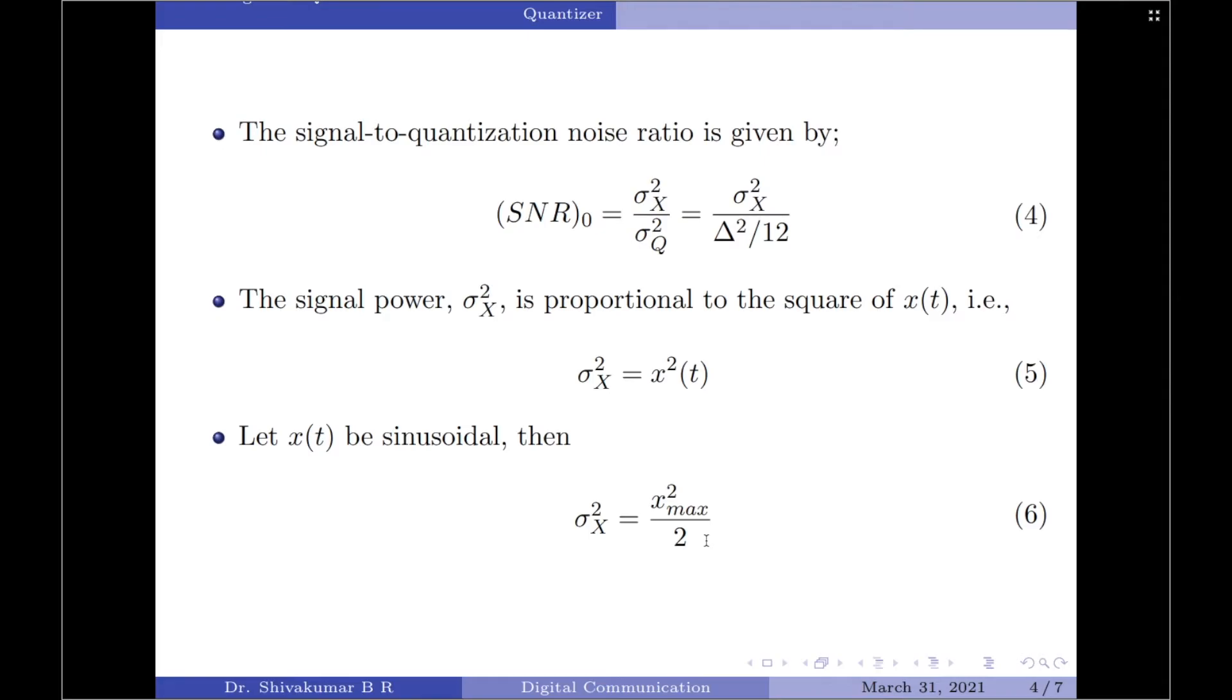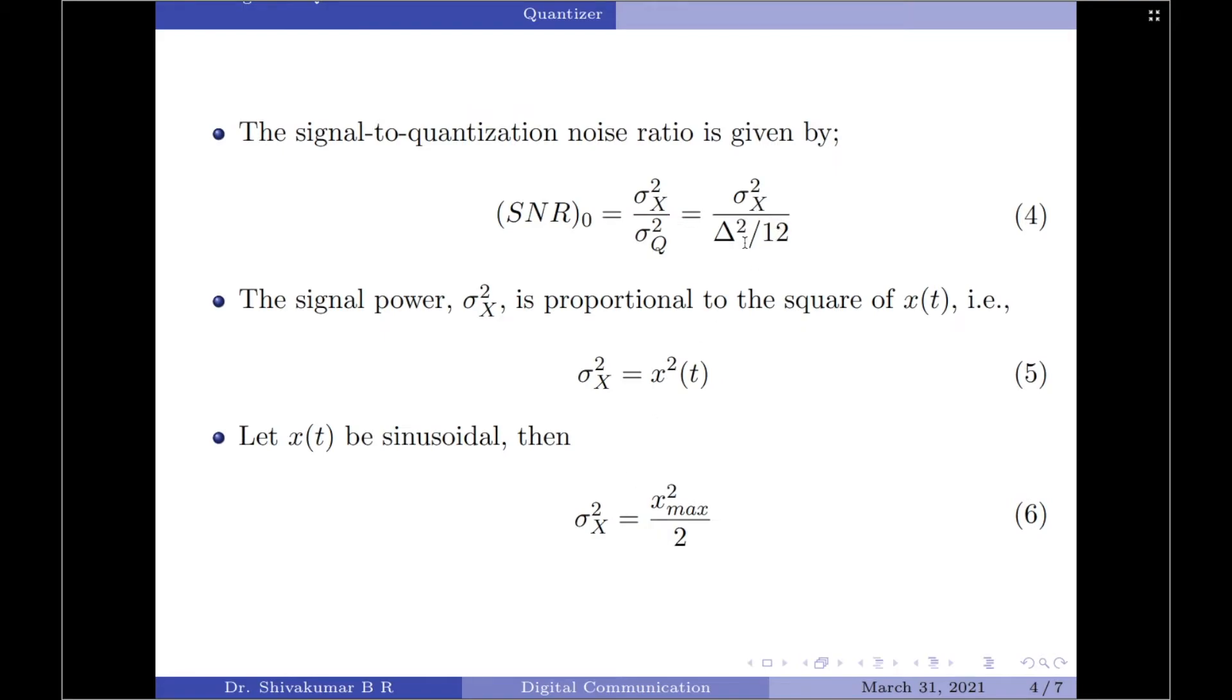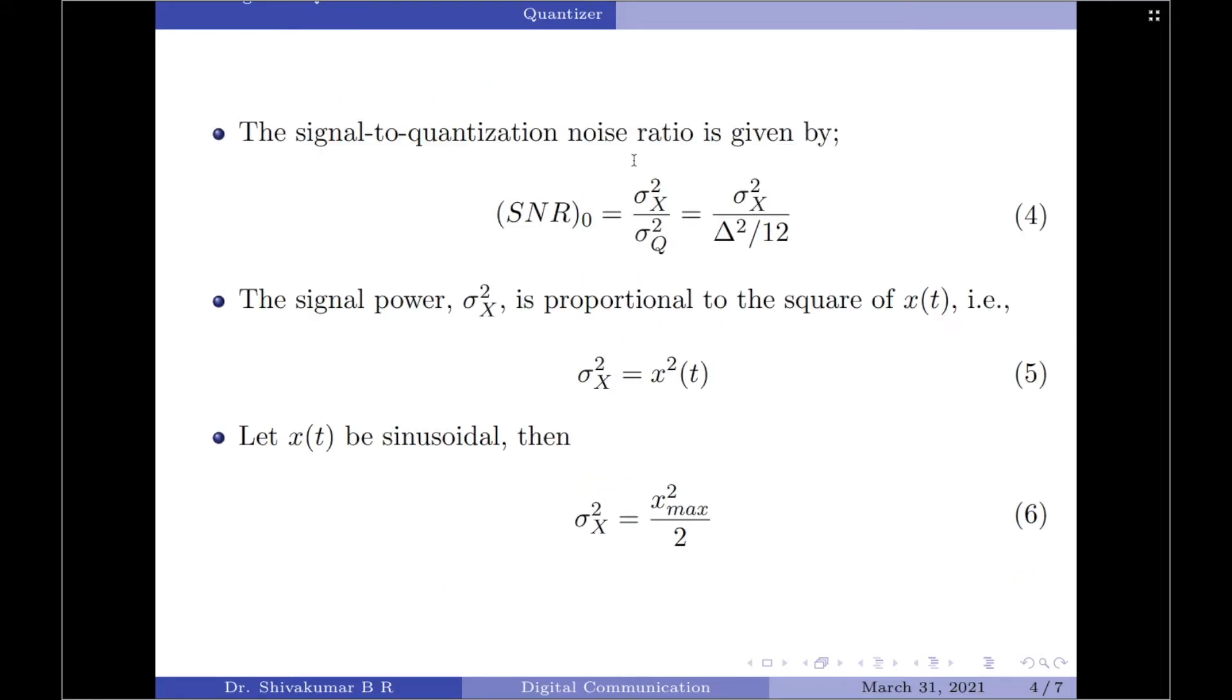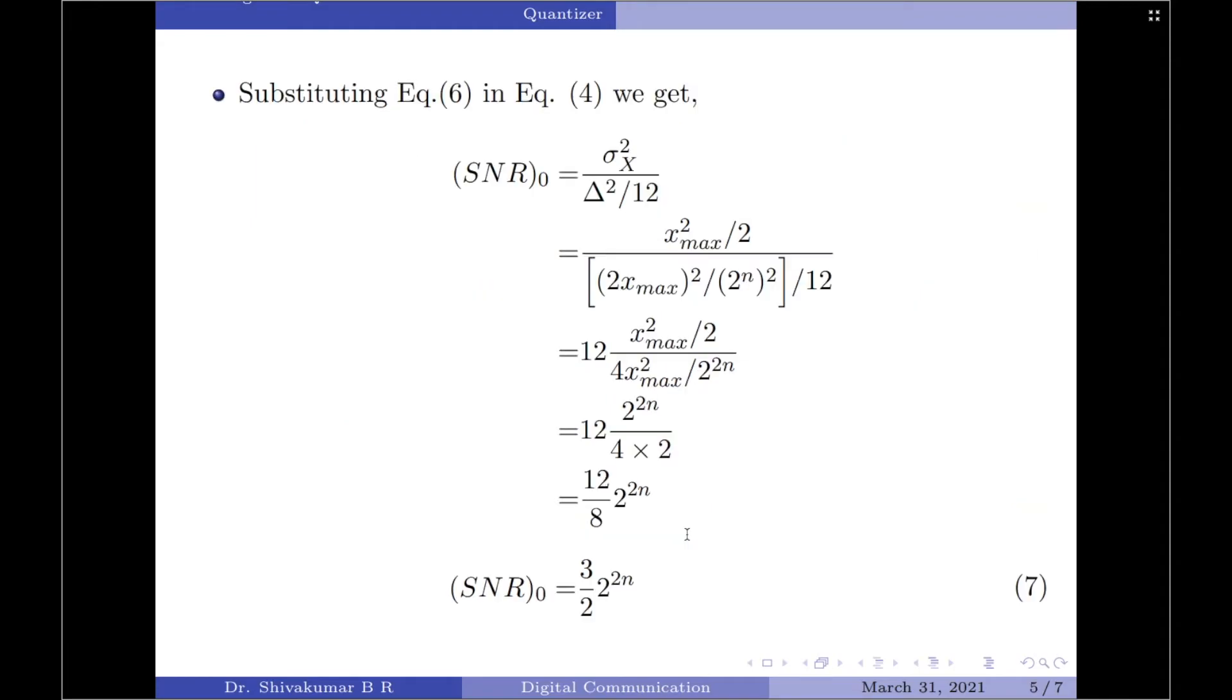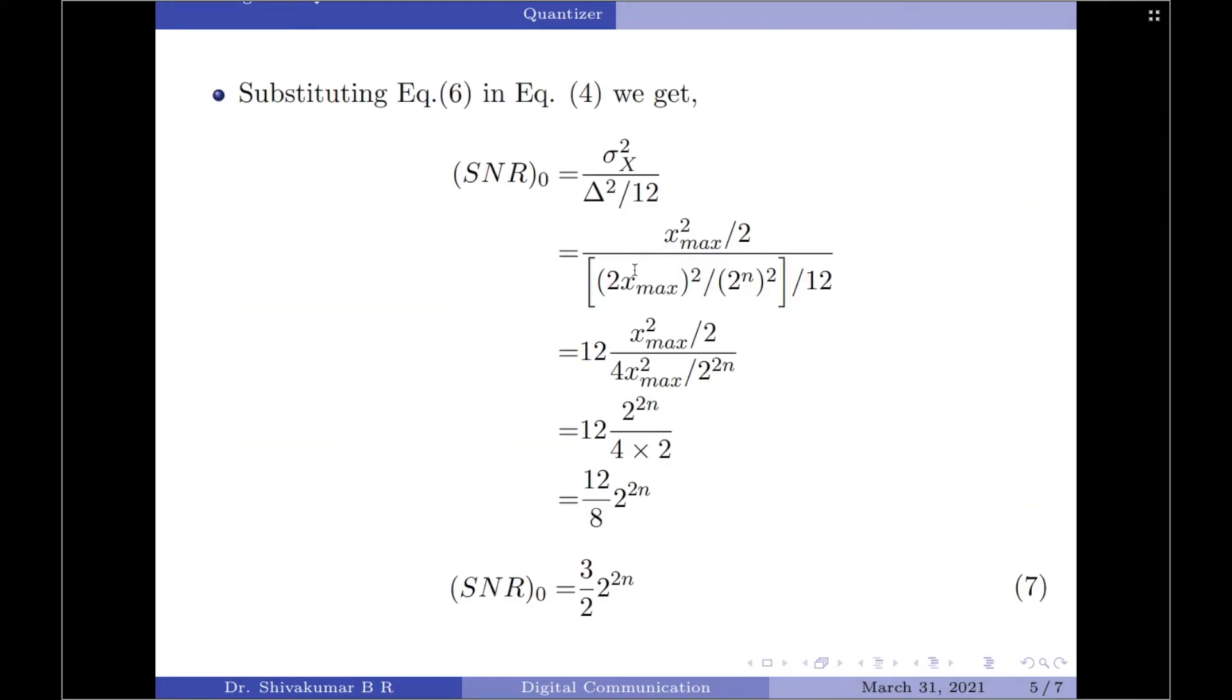So, we will now substitute for σ_X² as well as Δ into equation 4 and simplify. SNR_0 equals σ_X² divided by Δ²/12. σ_X² from equation 6 is x_max²/2. We will place it here first. Then, we are going to take the value of Δ and write it here. So, we have the square for the Δ as well, which should be noted.